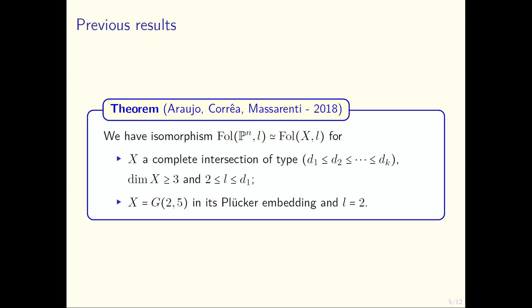A previous result in this direction is a paper by Carolina Araujo, Maurício Corrêa and Alex Massarenti, when they considered this problem in general for other distributions. They proved that this space of foliations is an isomorphism for X a complete intersection and d between 2 and the smallest degree of the hypersurface intersection, and also in the case of the Grassmannian G(2,5) with L equals 2, because that means the degree is zero.